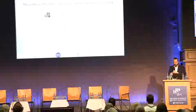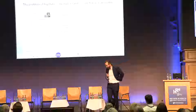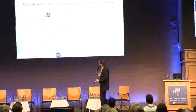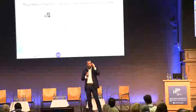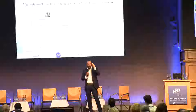Why is it that doctors cannot predict outcomes? It was said that doctors have big brains — they do, perhaps. But they can only hold about five things in mind at once. When you have to make a prediction or a decision, you can take five things into account. If you need to consider more than five factors, you start making mistakes. That's just a human cognitive capacity limitation — doctors included.